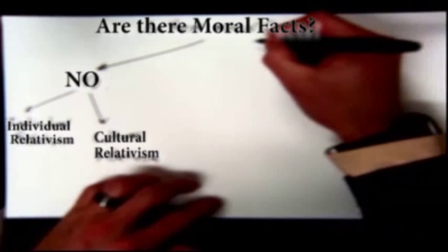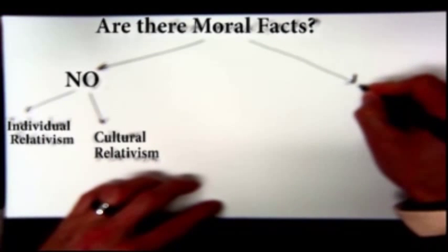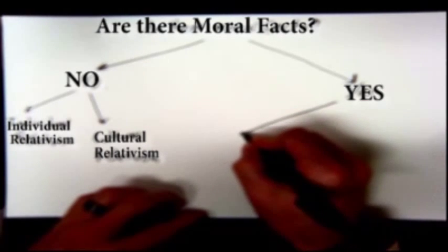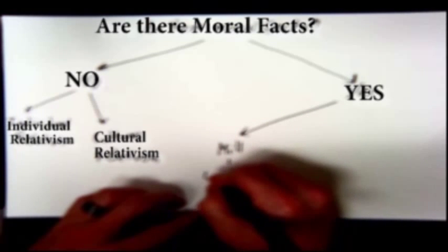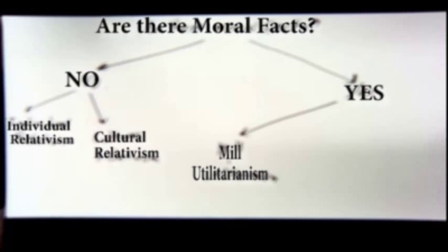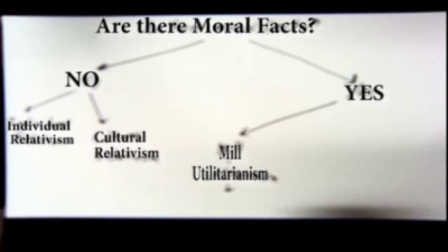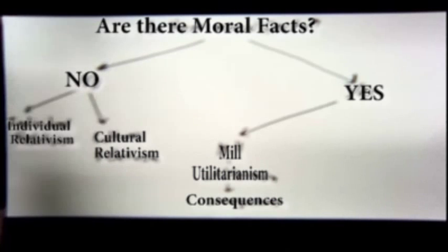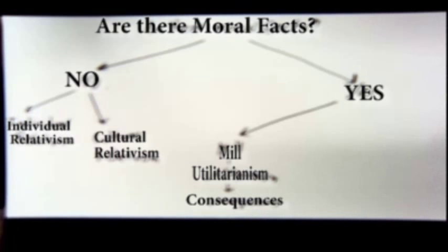Let's move to the 'yes' portion — are there moral facts? Yes, there are. The world is a place where we find moral truths. What kinds of truths are these? The first theory is Mill's utilitarianism. Utilitarianism basically defines morality in terms of consequences. An action is good if it creates good consequences, and an action is bad if it creates bad consequences. Utilitarians say morality is determined by the consequences an action produces.